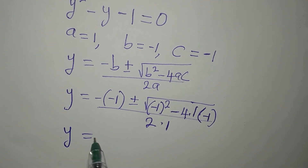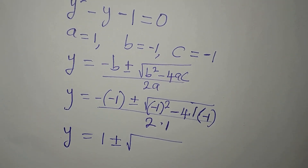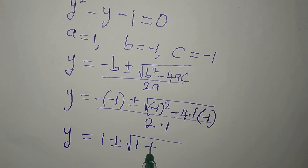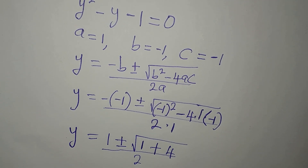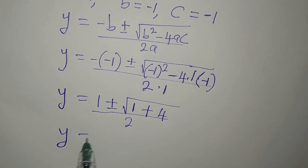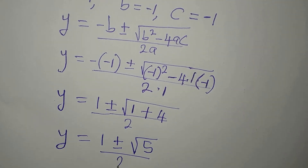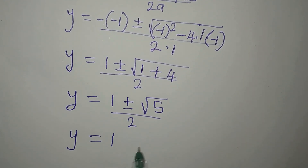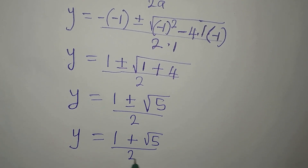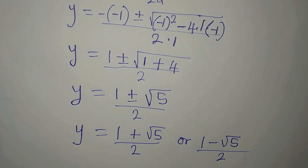So Y equals positive 1, plus or minus — then minus 1 squared is the same as minus 1 times minus 1, which gives positive 1. Then minus times minus gives plus, so 4 times 1 times 1 is 4. Dividing everything by 2, our Y equals 1 plus or minus square root of 5, over 2. This is a 2-in-1 solution because of the plus or minus. So Y equals (1 plus root 5) over 2, or (1 minus root 5) over 2.